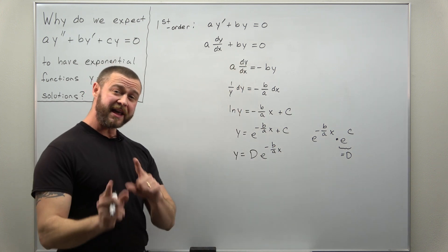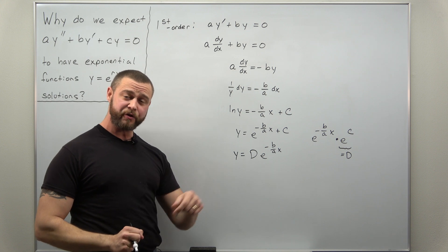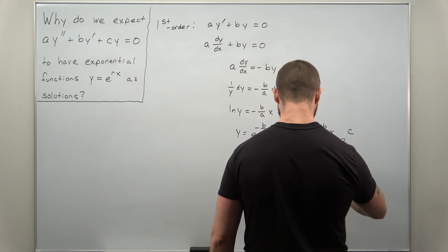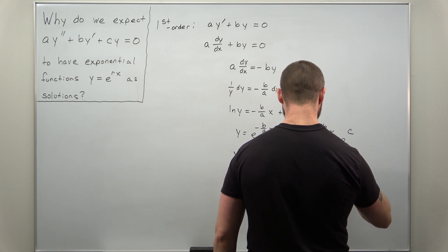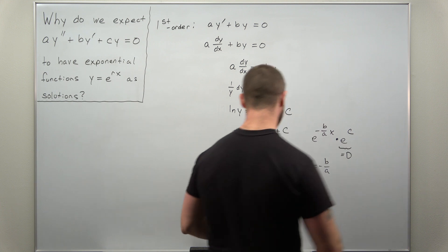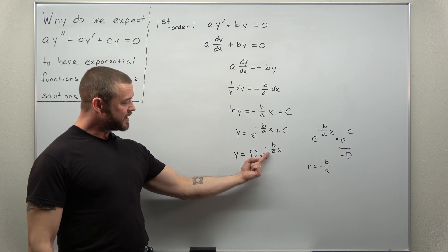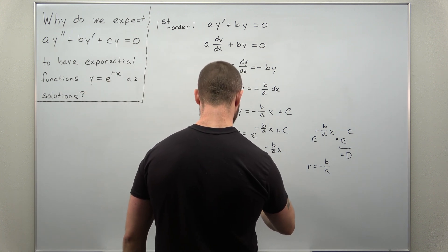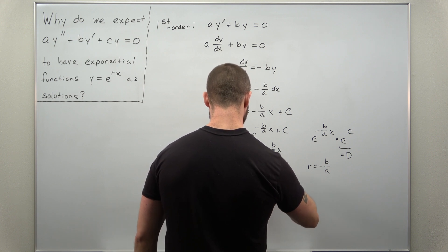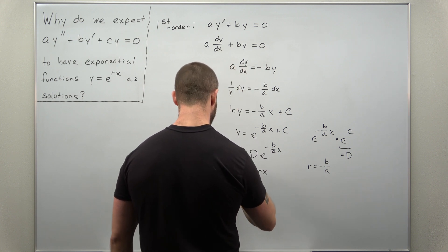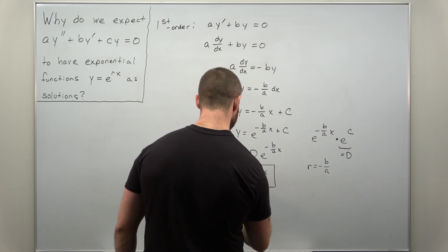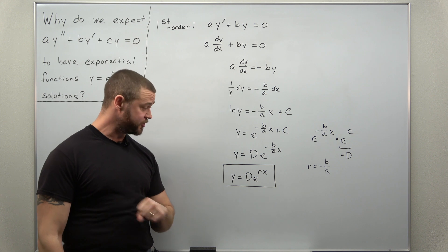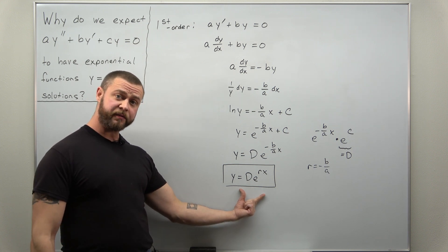And to make it look exactly the same, let me introduce another constant. Let me introduce r as negative b over a. And I can replace that constant negative b over a with r. And what we get as a solution to our first order ODE with constant coefficients is an exponential function.